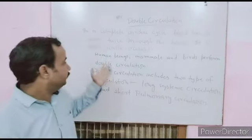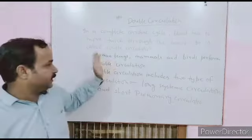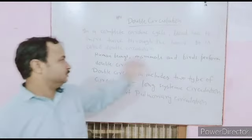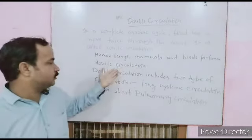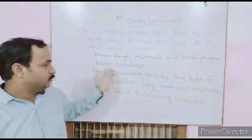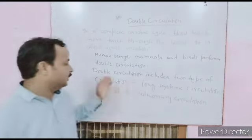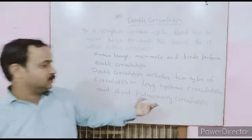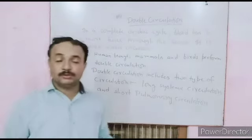Mammals, birds, and human beings perform double circulation. Double circulation includes two types of circulation: long systemic circulation and short pulmonary circulation.